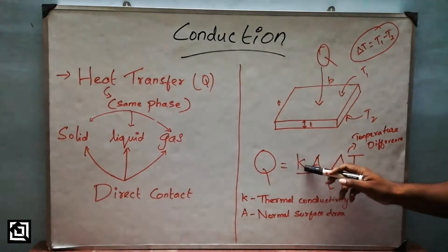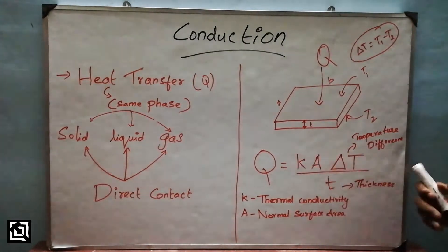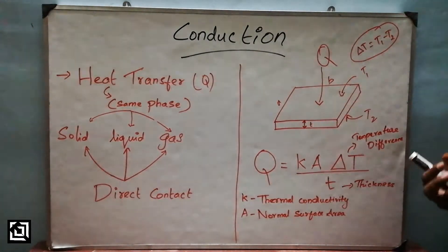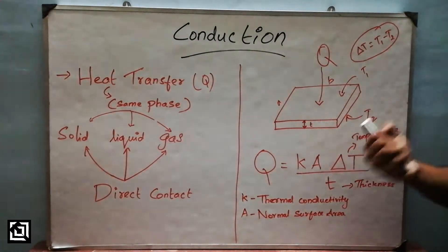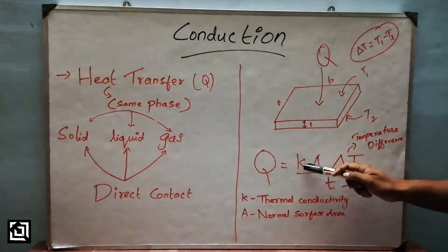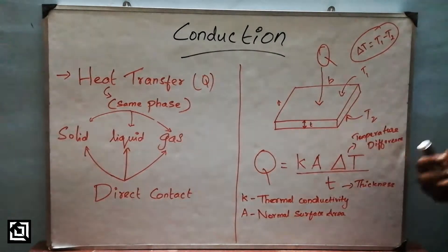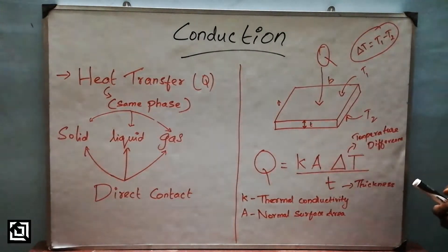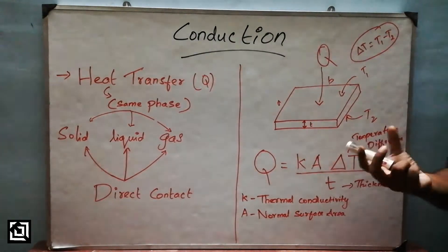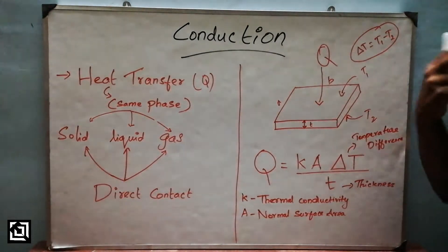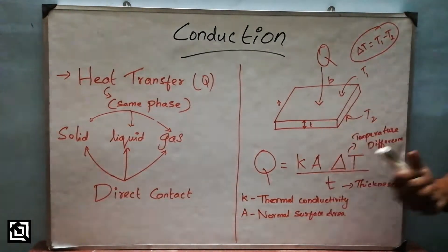The first factor is K — thermal conductivity. Thermal conductivity is the ability of a material to conduct heat. If thermal conductivity is low, the heat transfer will be very low.